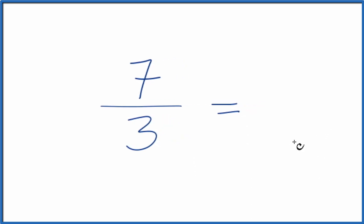To do that, we need to find a common factor, the greatest common factor that goes into 7 and 3. And the only thing that goes evenly into 7 and 3 is 1.